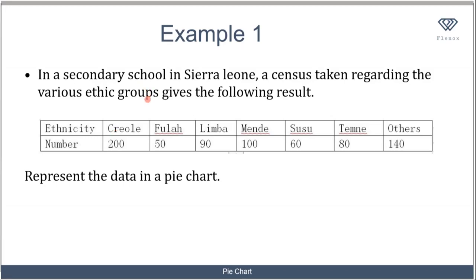You have ethnicity and the total number of people. 200 people have ethnicity of Krioli, Fula 50, Limba 90, Mende 100, Susu 60, Temne 80, and Others 140. So how do we represent this in a pie chart?